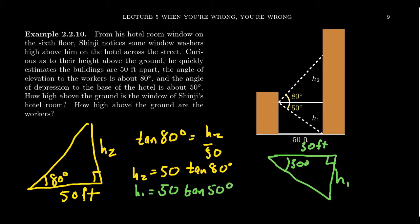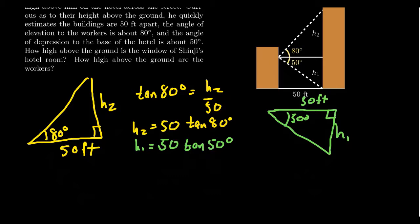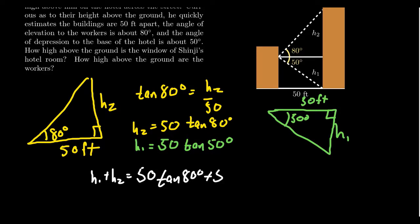And so the height above the ground of the window washers is going to be H1 plus H2, which is going to equal 50 times tangent of 80 degrees plus 50 times tangent of 50 degrees. For which, as 50 is a common factor of both, we can factor it out and get 50 times tangent of 80 degrees plus the tangent of 50 degrees.